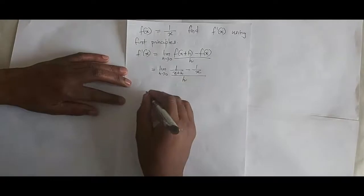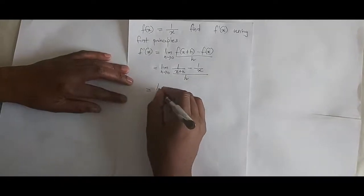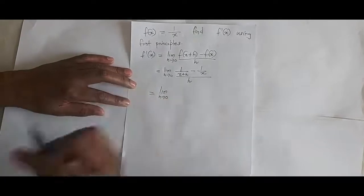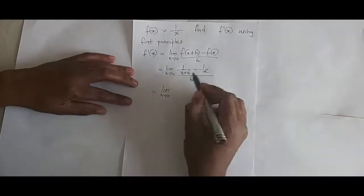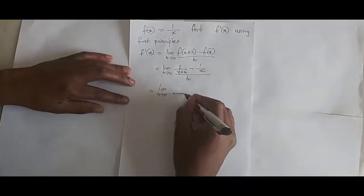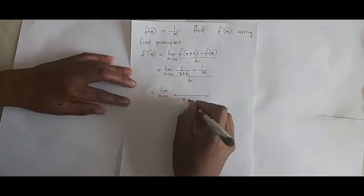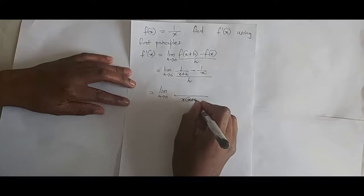Which is now equal to the limit as h approaches 0 of, where I add the two fractions. I look for the common denominator, that will be x into x plus h.